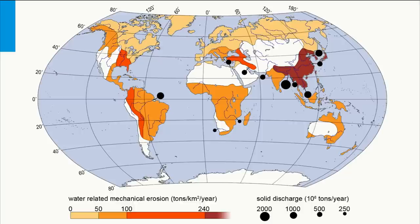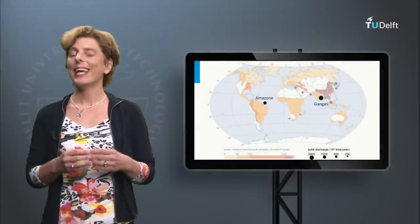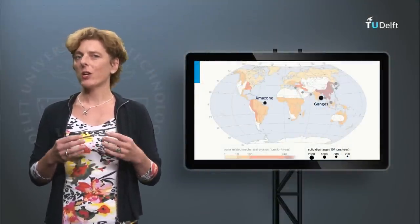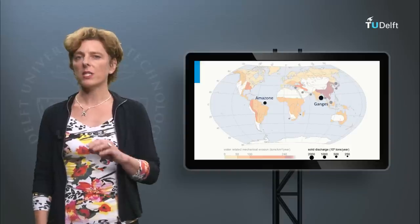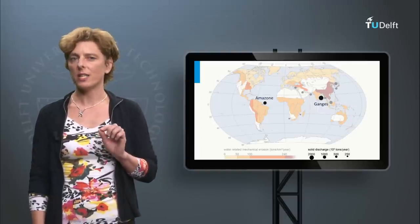Let us have a closer look at the location of two important deltas, the Amazon and the Ganges. You may check that they are indeed located far away from plate boundaries. Also note in both cases the large catchment areas that supply these deltas with sediment. As we suggested before, when it comes to the fate of a coast, the eustatic or absolute sea level rise is presently only a second-order effect, and this is especially true for delta regions.